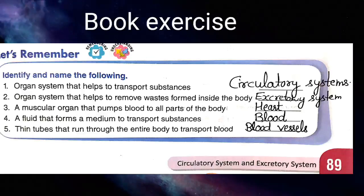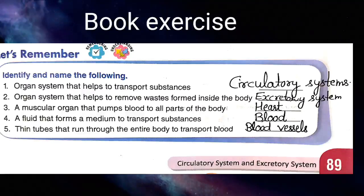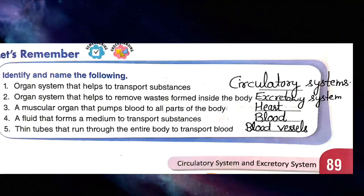The first one is: identify the organ system that helps to transport substances — nutrients, water, and oxygen — to our body. The correct answer is the circulatory system.